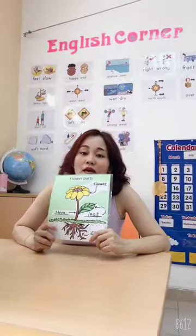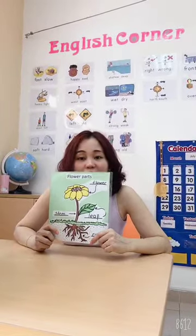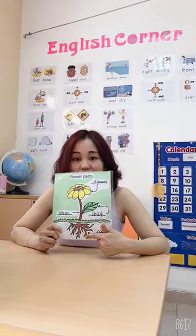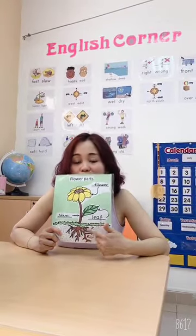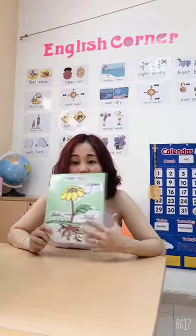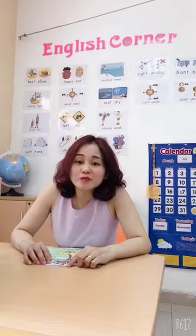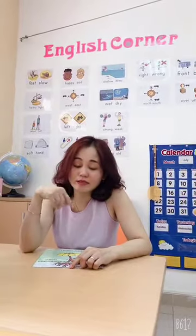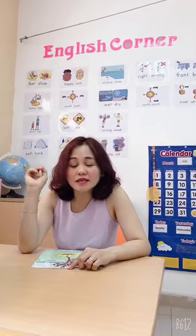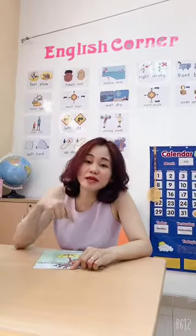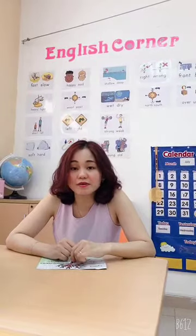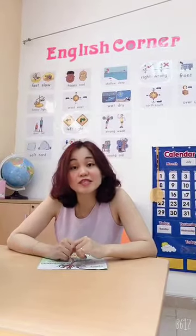A plant cannot grow if it doesn't have roots. Roots are the most important thing for a plant. And especially, if we put the plant outside, the sunlight will make the flower grow. And we need to water the plants every single day.